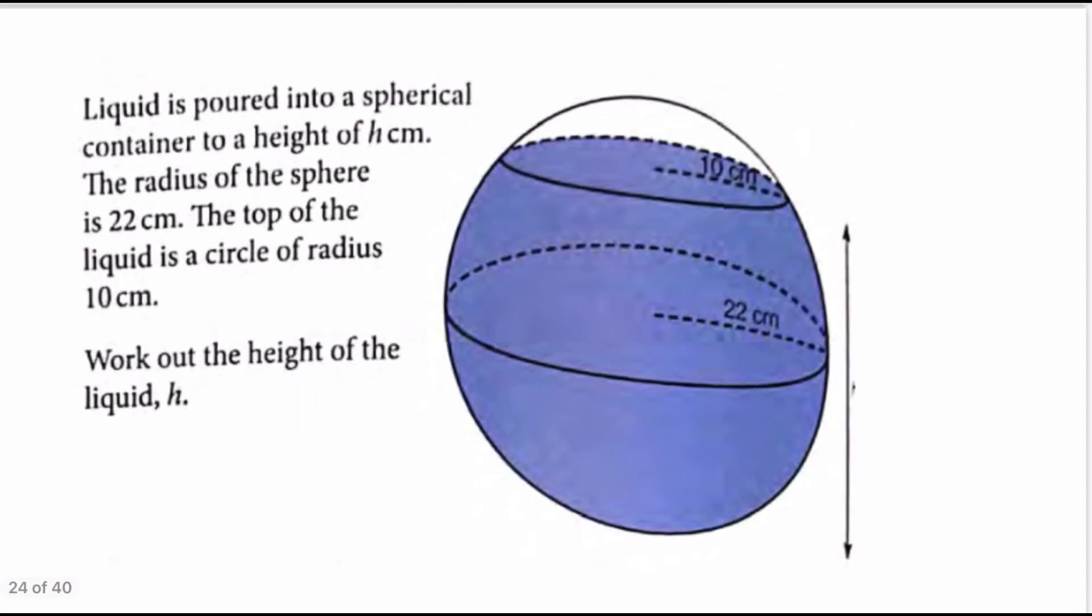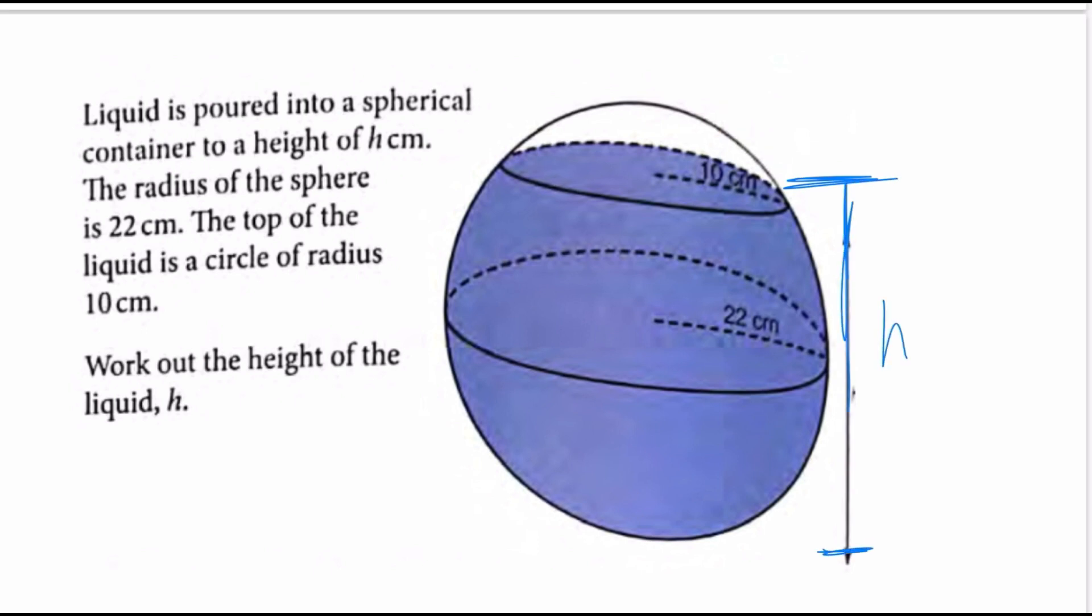Let's take a look at this problem. Liquid is poured into a spherical container to a height of h centimeters. The radius of the sphere is 22. The top of the liquid is a circle of radius 10. Work out the height of the liquid h. So, the liquid basically extends from here all the way down to the bottom. That is going to be h.